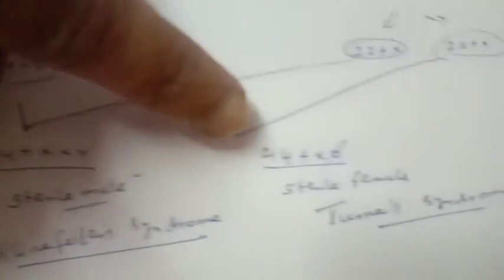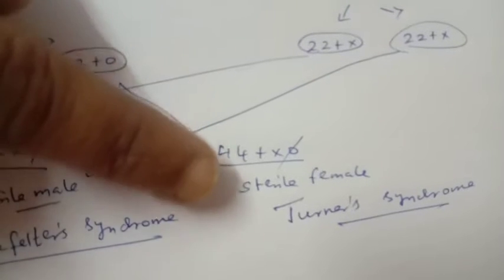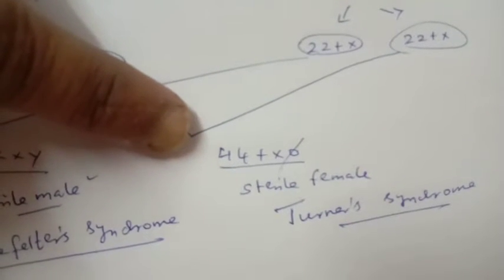Another kind of people with one chromosome less, 44 plus X, is said to be Turner's syndrome. They show sterility, female sterile female.